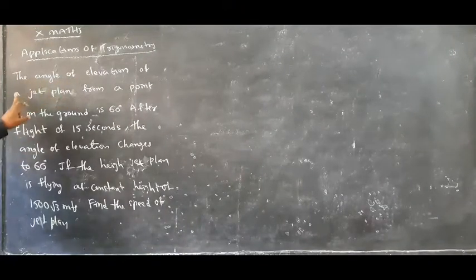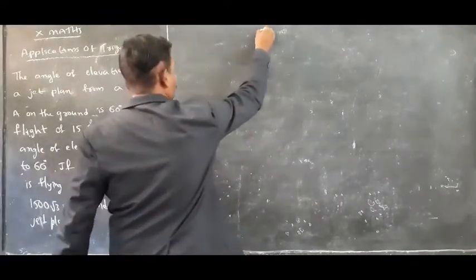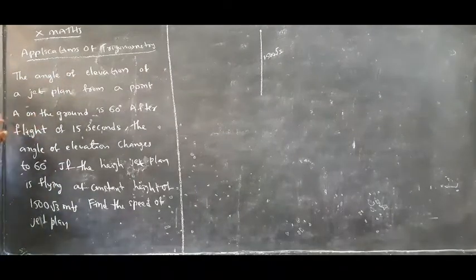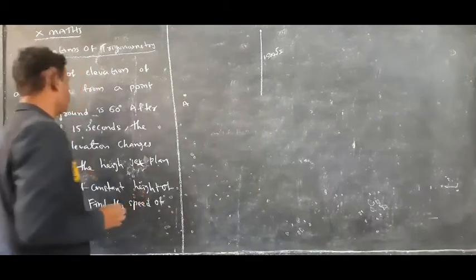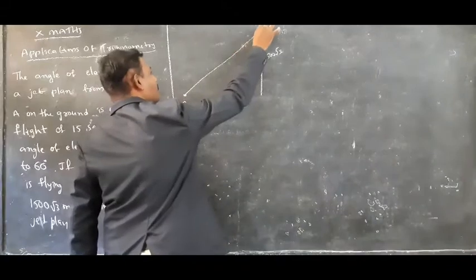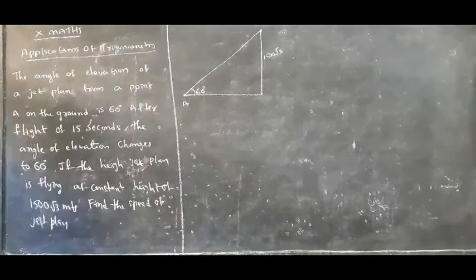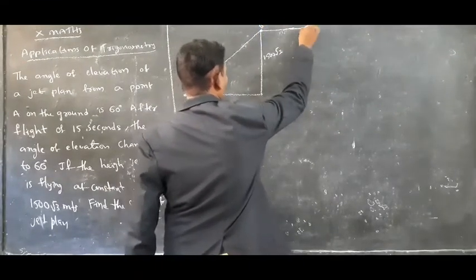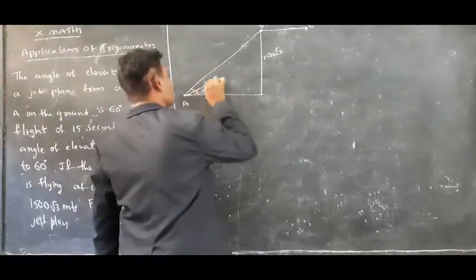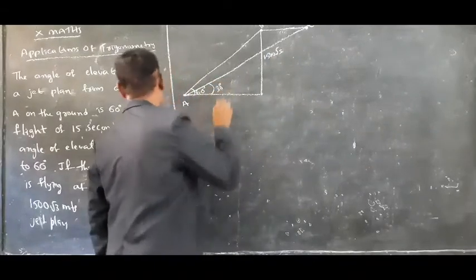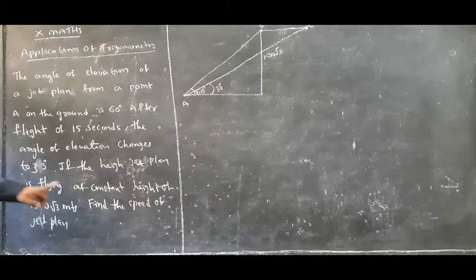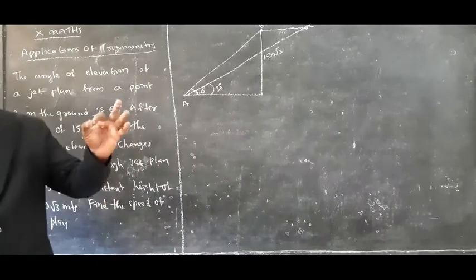Another question from the 12.2 exercise: the angle of elevation of a jet plane from a point A on the ground is 60 degrees. The plane is flying at a constant height of 1500 root 3 meters. After 15 seconds, the plane has moved and the angle of elevation changes to 30 degrees. We have to find the speed of the jet plane.